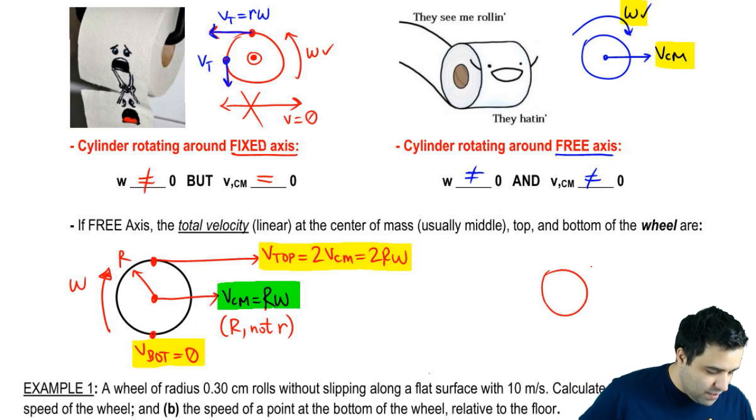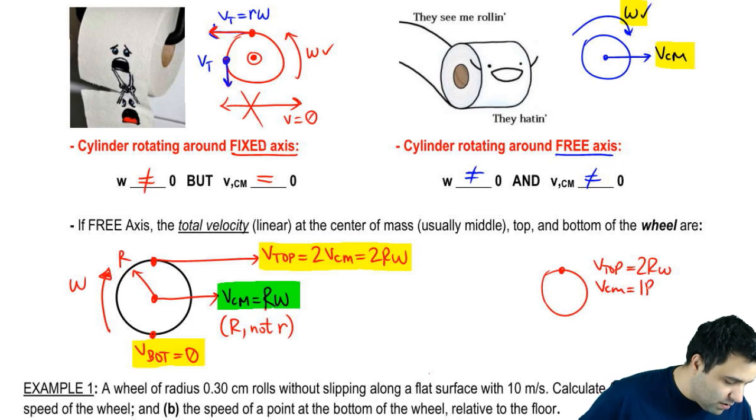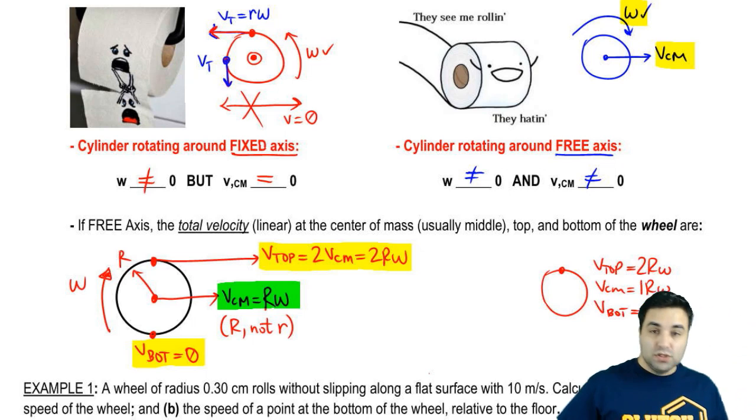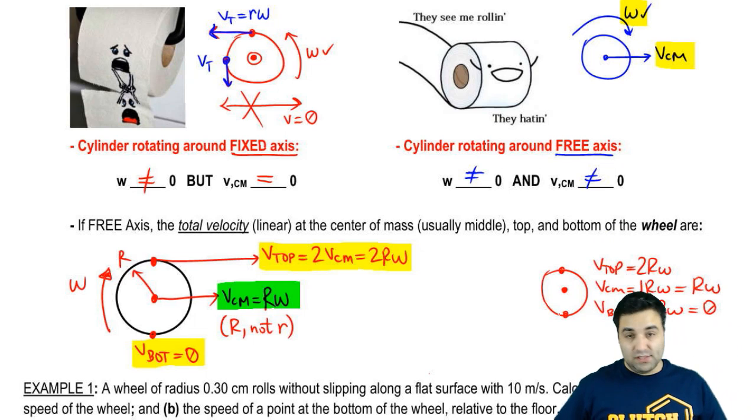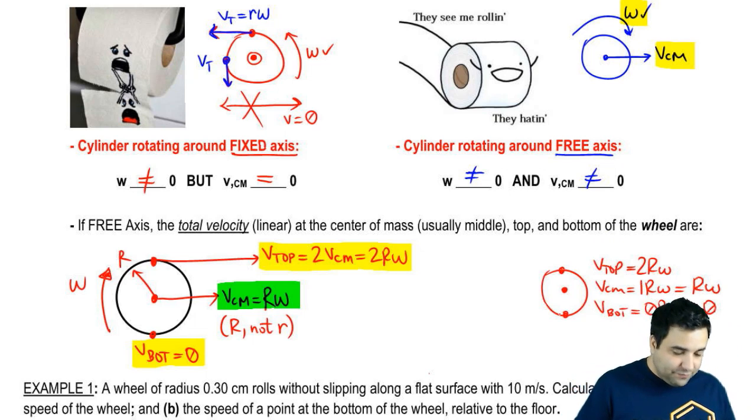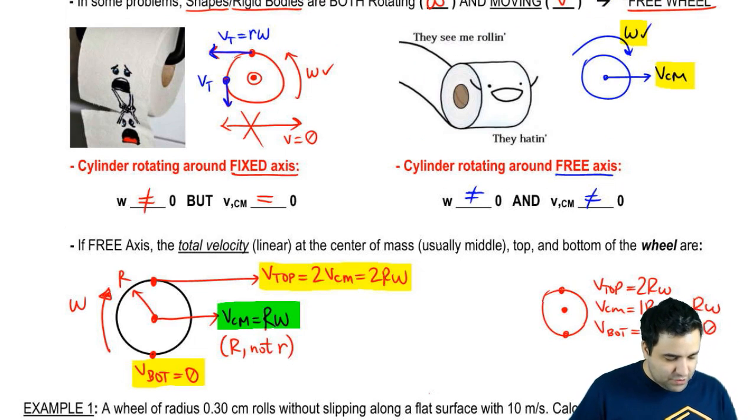Here's a really easy way to remember this. I'm going to draw this again here. V top, velocity at the point at the top is 2R omega. Velocity in the middle is 1R omega. And velocity at the bottom is 0R omega. So 0, 1, 2. Obviously, this simplifies into R omega. And this simplifies into 0.